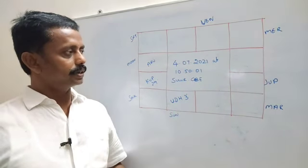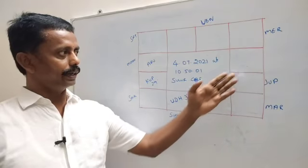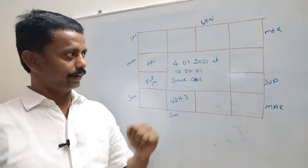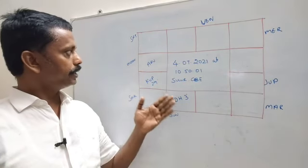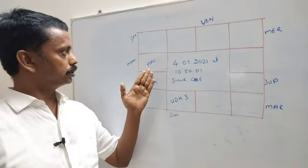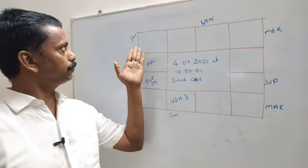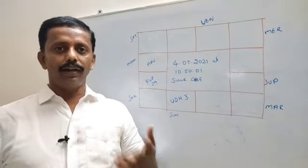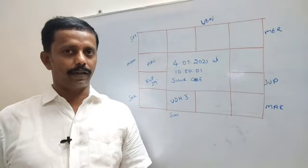9th house, father's significate of house 9th house, 9th lord Moon not effect. So property, significate of house 4th house. So 4th house and 4th lord Saturn not effect. So she will get father's property.